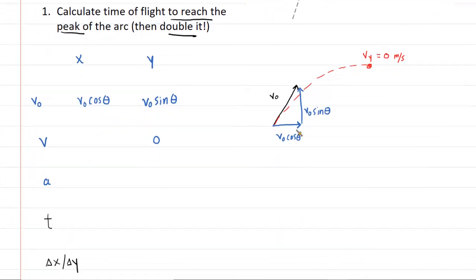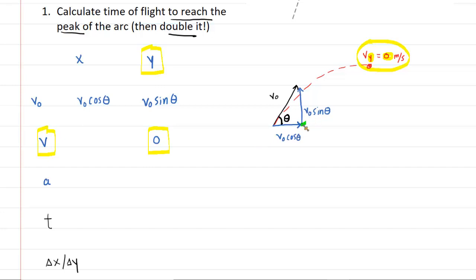The proton is fired at a projection angle and follows a parabolic trajectory. From projectile motion, at the peak of flight, the final velocity in the y direction equals 0 m/s. We've filled in a chart: the final y-velocity is 0 m/s, and the y-component of the initial velocity is v₀ sin θ. Now we need to address the acceleration.